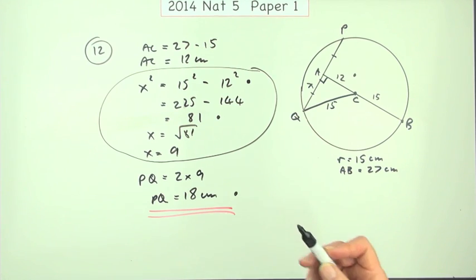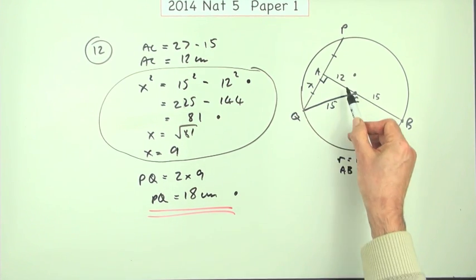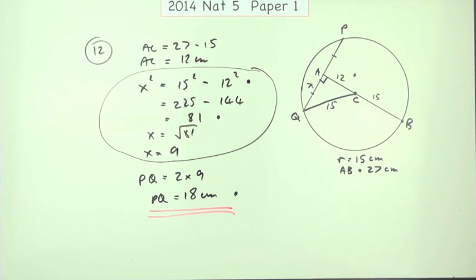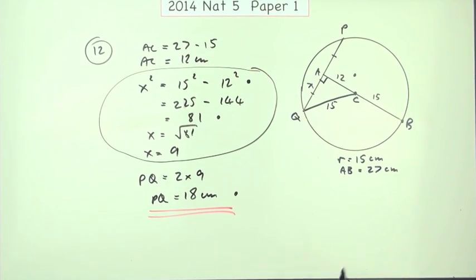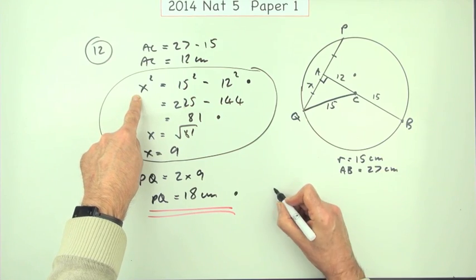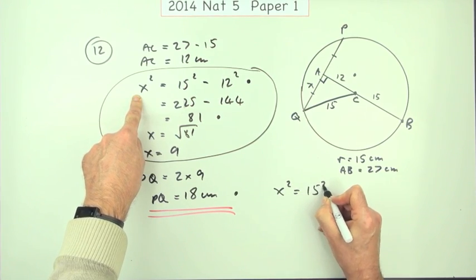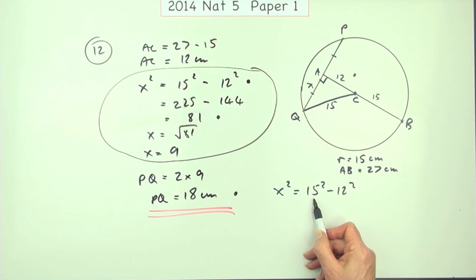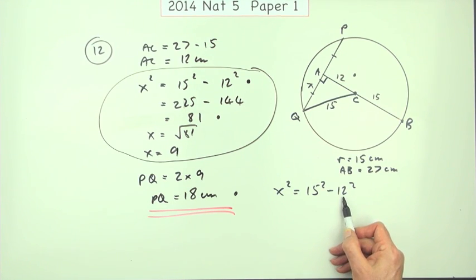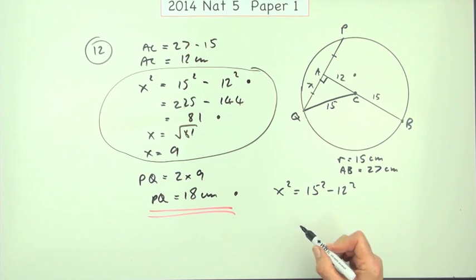Because there's two marks within that, it could have been done quite simply if you recognized you've got a multiple of a 3-4-5. And there's no mention in the marking scheme of how they would handle that. Because if I was doing this, I wouldn't have gone through all that. But then knowing it's an exam, I might put the first line down: well, X² is 15² - 12², then thought, oh wait a minute, that's 3 × 5, that's 3 × 4. So that means that the answer must be 3 × 3, which is 9.